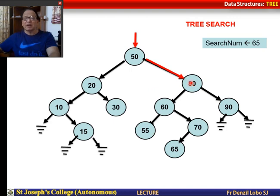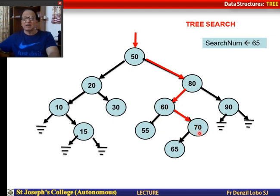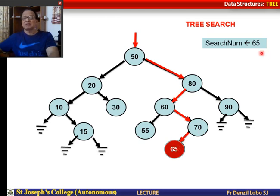I go to the root of this right subtree and ask: is 65 greater than 80? No. Then I move to the left subtree and ask the same question: is 65 greater than 60? Yes. Then I move to the right subtree and ask: is 65 greater than 70? No. Then again I go to the left subtree, and there is only one node left. When I ask this question, it seems to be correct. Therefore, I have found the search number, which is 65.